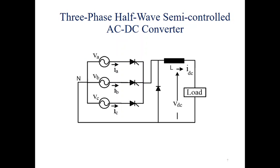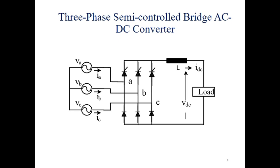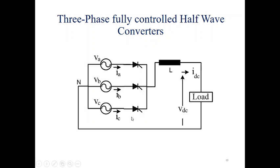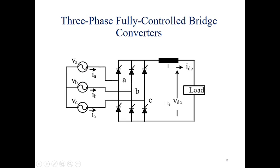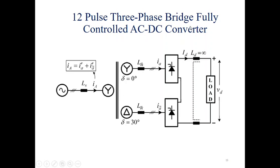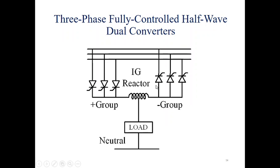This is a three-phase half-wave semi-controlled rectifier. This is a three-phase bridge rectifier. This is a three-phase semi-controlled converter — you can see that the lower part has no active devices. This is a three-phase fully controlled half-wave converter, a three-phase fully controlled bridge converter, and a 12-pulse fully controlled converter.